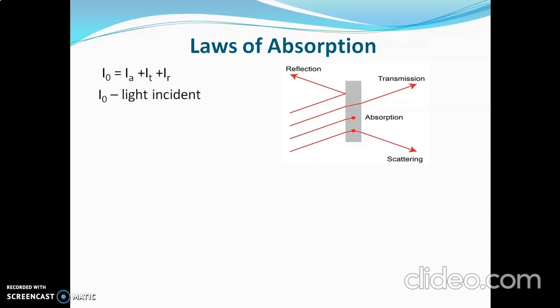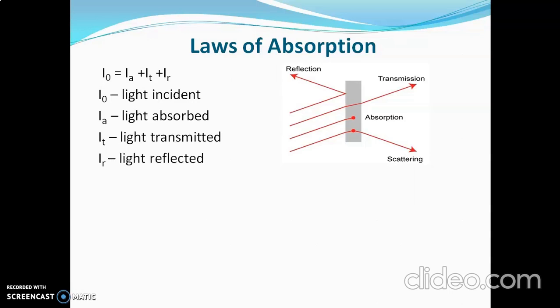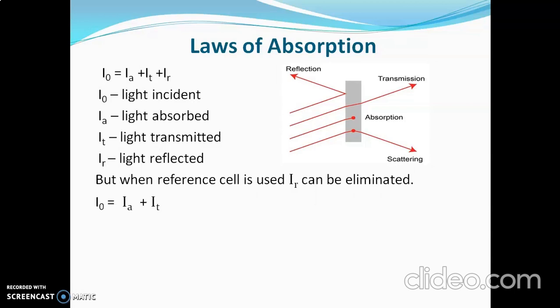Here I0 is total incident light, Ia is light absorbed by the sample, It is light transmitted through the sample, and Ir is light reflected from the sample. The amount of reflection is only 4%, and if we use a reference cell, this reflection can also be eliminated. So the equation becomes I0 = Ia + It, and absorbed light Ia = I0 − It.